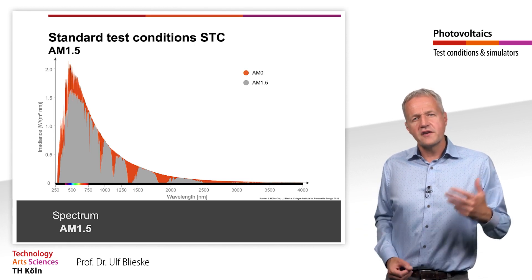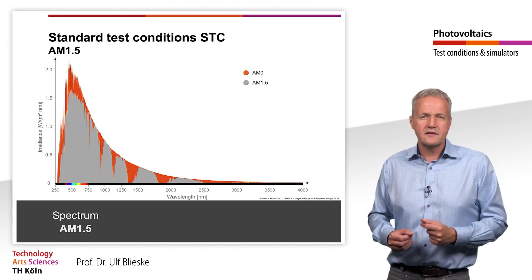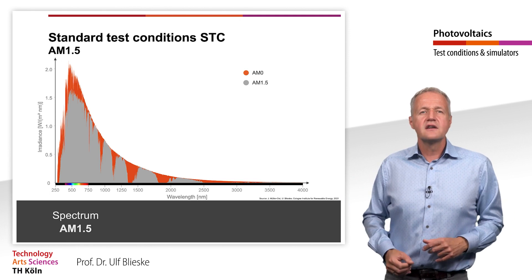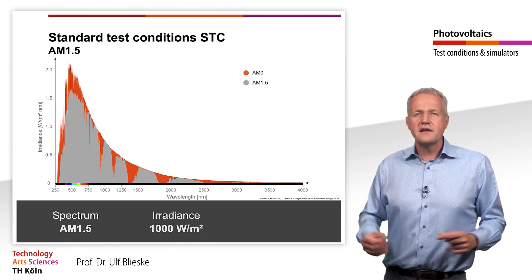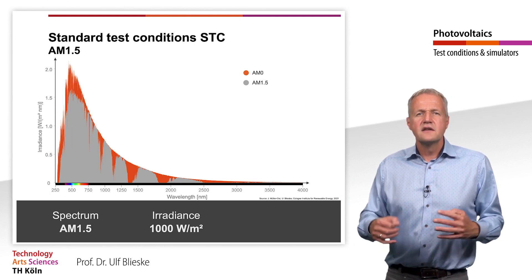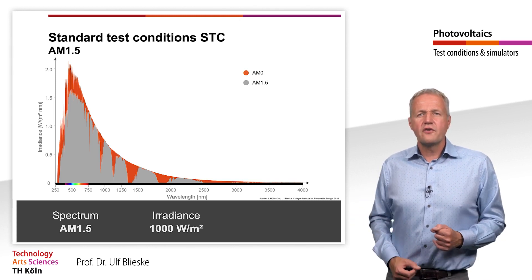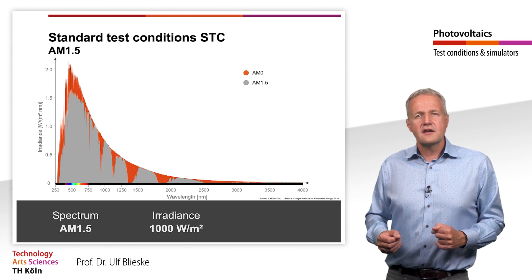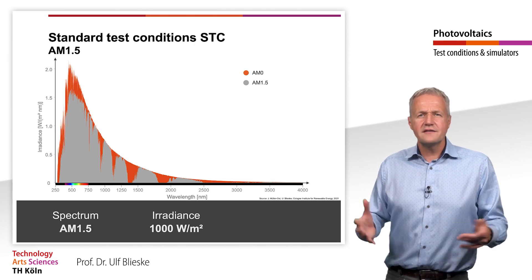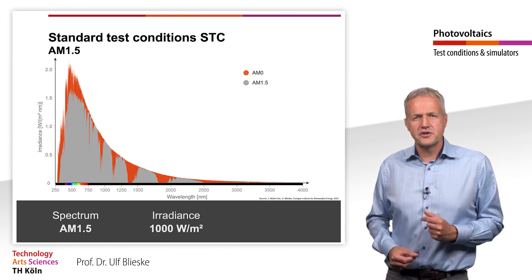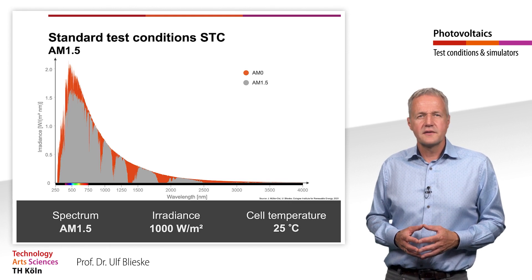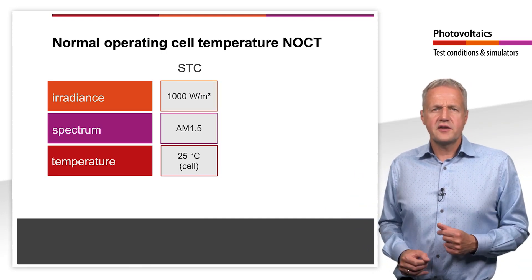The second specification for the STC refers to the irradiance. Similar to the spectrum, the irradiance depends strongly on the attenuation in the atmosphere. For the STC, an irradiance of 1000 W per square meter is defined as the default value, which corresponds approximately to the irradiance on a clear summer day at northern or southern latitudes, hence outside the tropics. The third condition of STC refers to cell temperature, which must be 25 degrees Celsius. You can see here a list of all the STC specifications.